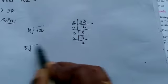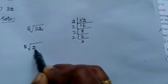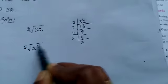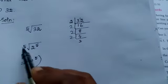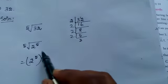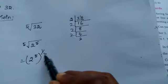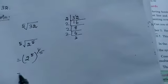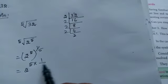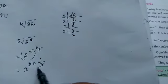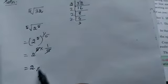The 5th root of 2 power 5 — now how will you write 2 power 5 under a 5th root? You write it as 2 power 5 into 1 by 5. Now 5 and 5 cancel, and what is the answer? 2. This is the answer.